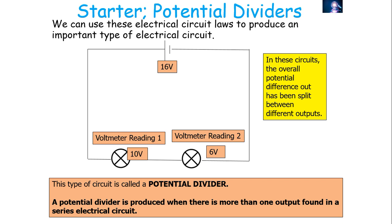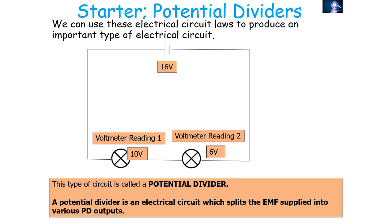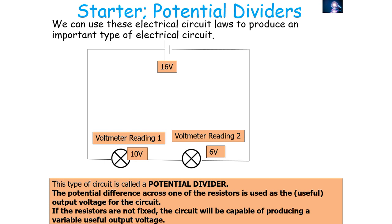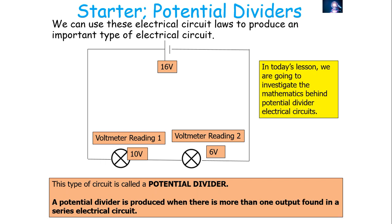In these circuits the overall potential difference has been split between the different outputs, so the EMF supply is being split between your different outputs. You will need at least two transducers — whether bulbs, resistors, LDRs, thermistors, or variable resistors — and a voltage source like a power pack, cell, or battery. The potential difference across one of the resistors is defined as the useful output voltage for the circuit, and if the resistors are not fixed, this provides a variable useful output voltage, which can be used in things like dimmer switches.